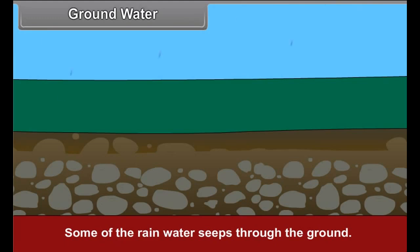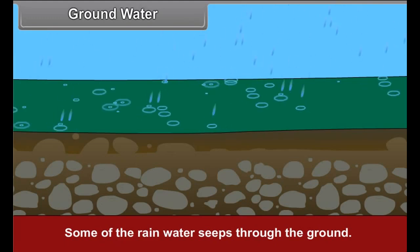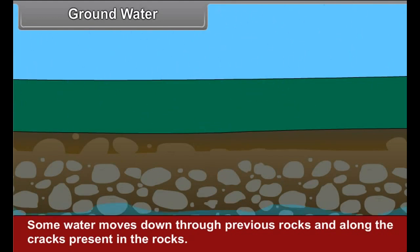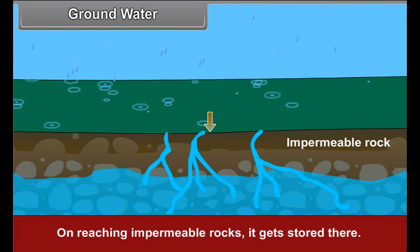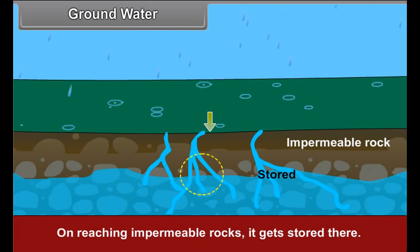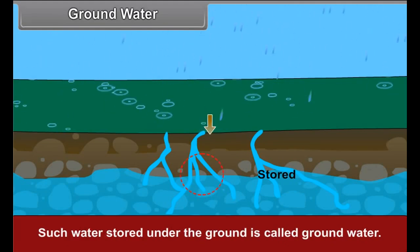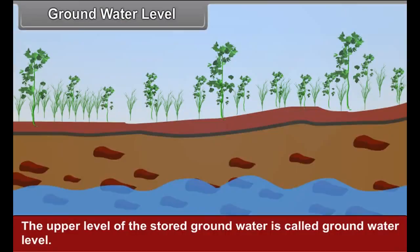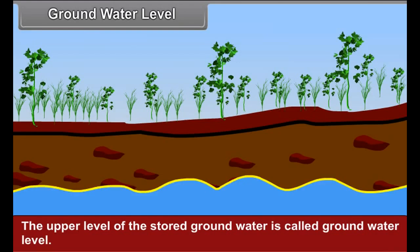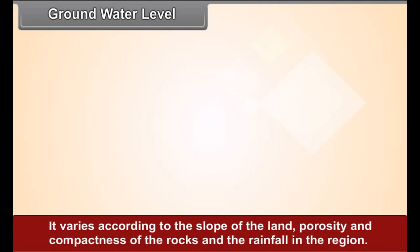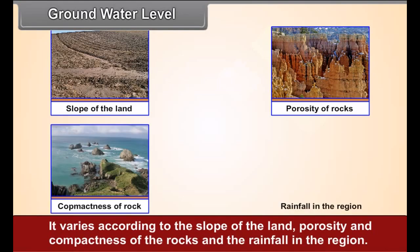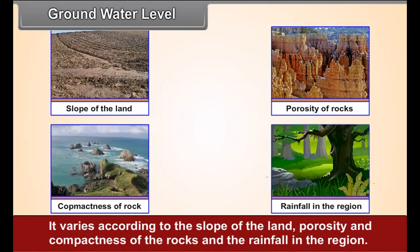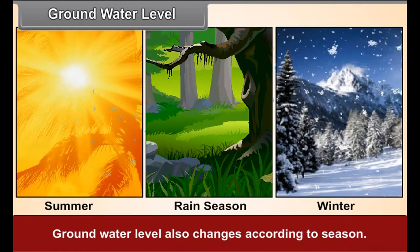Groundwater: Some of the rainwater seeps through the ground. Some water moves down through pervious rocks and along the cracks present in the rocks. On reaching impermeable rocks, it gets stored there. Such water stored under the ground is called groundwater. The upper level of the stored groundwater is called the groundwater level. It varies according to the slope of the land, porosity and compactness of the rocks, and the rainfall in the region. Groundwater level also changes according to the seasons.